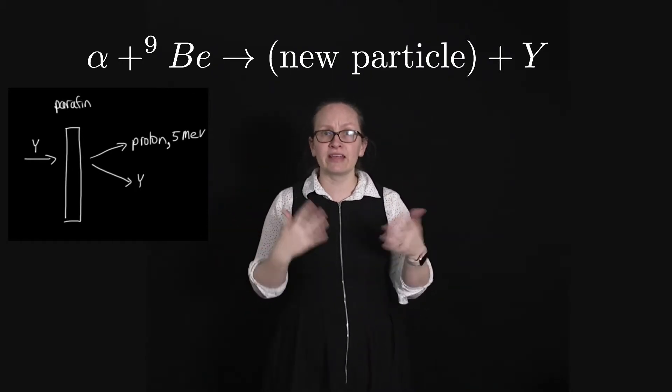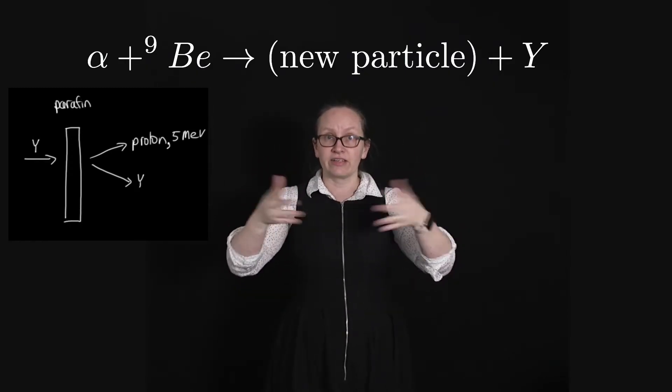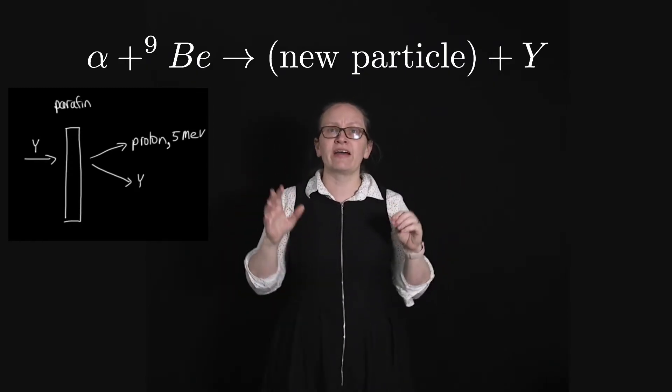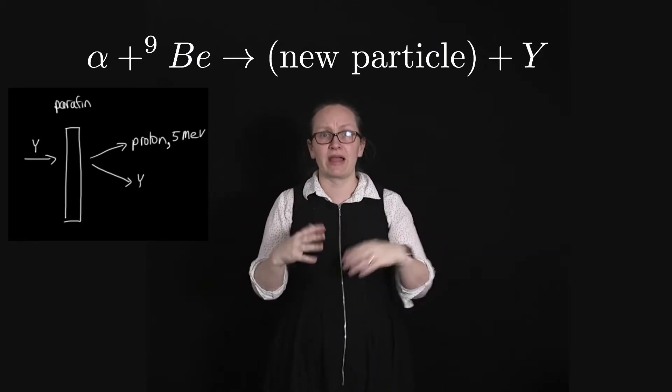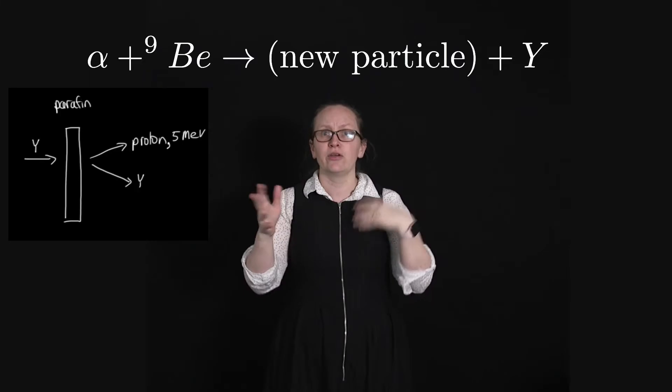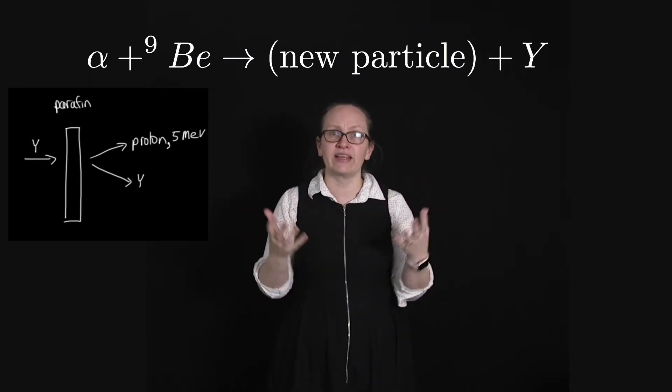They were then able to do calculations using Compton's scattering equation to work out that if this radiation, which they were slamming into the paraffin wax, was gamma radiation, which was the popular theory at the time, then that gamma radiation required an energy of 50 mega electron volts, which is a lot higher than it was thought to be probable.